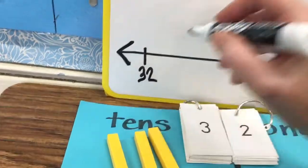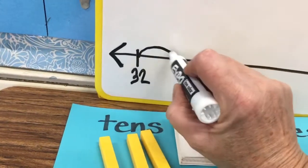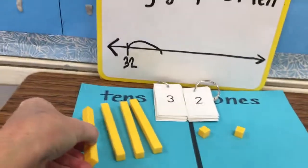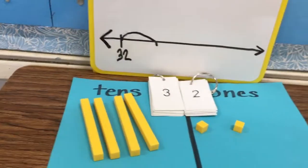If I'm starting with the number 32 and I want to add a group of 10, this is how it would look visually with my manipulatives.